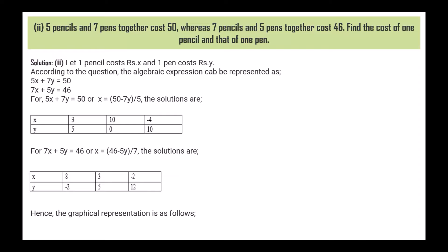Next: five pencils and seven pens together cost 50, whereas seven pencils and five pens together cost 46. Find the cost of one pencil and one pen. Let one pencil cost rupees x and one pen cost rupees y. According to the question, the algebraic expressions are 5x + 7y = 50 and 7x + 5y = 46. For 5x + 7y = 50, or x = (50 - 7y) / 5, the solutions are: x = 3, y = 5; x = 10, y = 0; x = -4, y = 10.